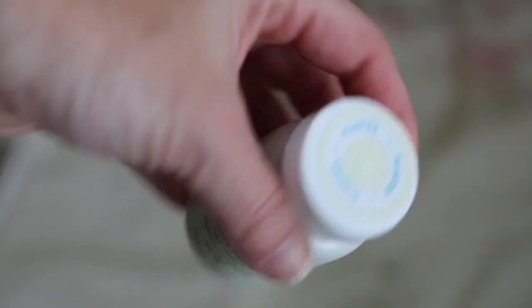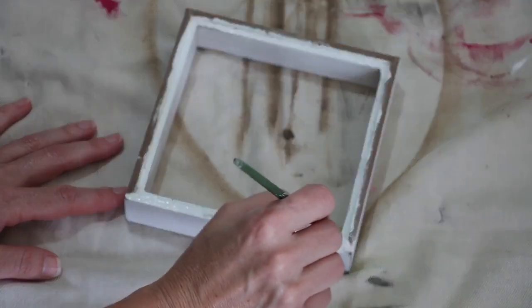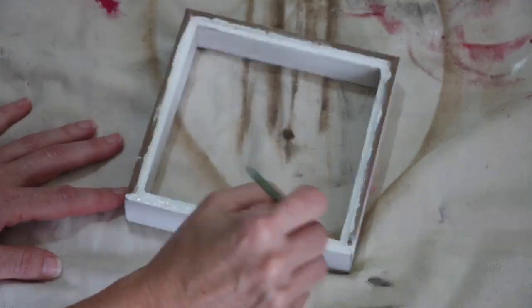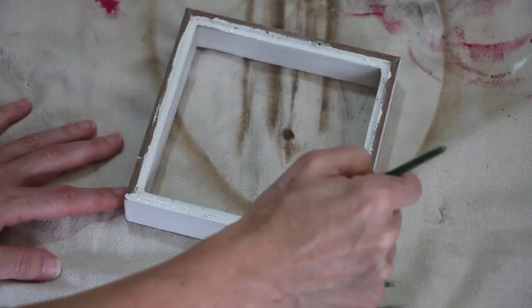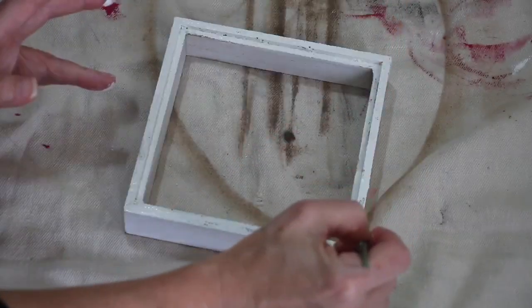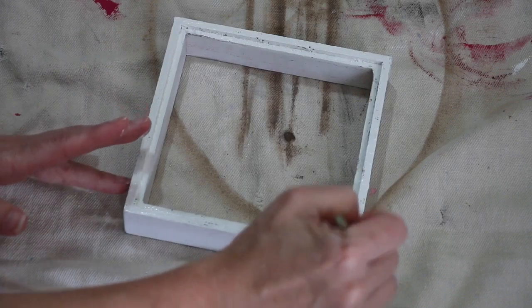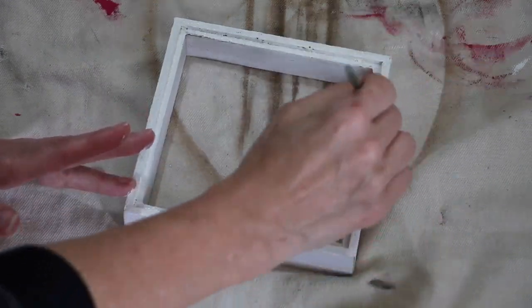After that, I went in with Waverly's chalk paint and plaster and I painted the back side. Again, it doesn't have to be perfect. I just wanted to cover up that boxy cardboard look so that it would have a great 360 view, so that no matter what side you looked at, it would seem like a finished product.